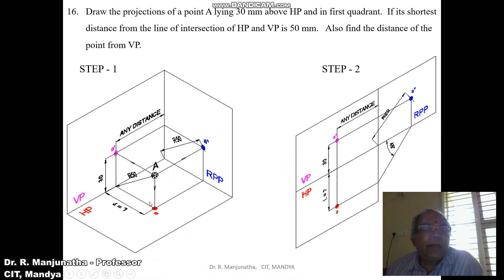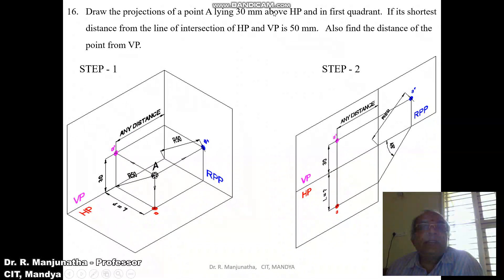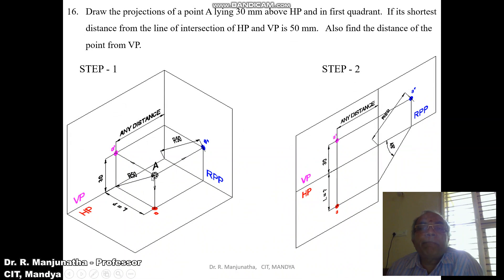This is the shortest distance. Point A is 30 mm above HP. This is 30 mm above HP and its shortest distance from the line of intersection of HP — this is the line of intersection of HP, this is the horizontal plane and this is the vertical plane — its shortest distance from the intersection is 50 mm.